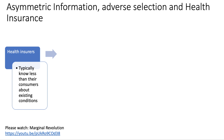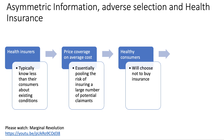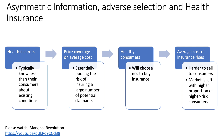In health insurance, the seller typically knows less than the buyer about existing conditions — this is the reverse of the used car market, where the seller knew more. So BUPA, AXA, Vitality Health, etc., know less than their consumers about existing or chronic health issues. If they price on average cost, they're pooling the risk of insuring thousands of potential claimants. But healthy consumers — if you're young and healthy — may decide it's not worth buying health insurance, perhaps until their late 40s or 50s.